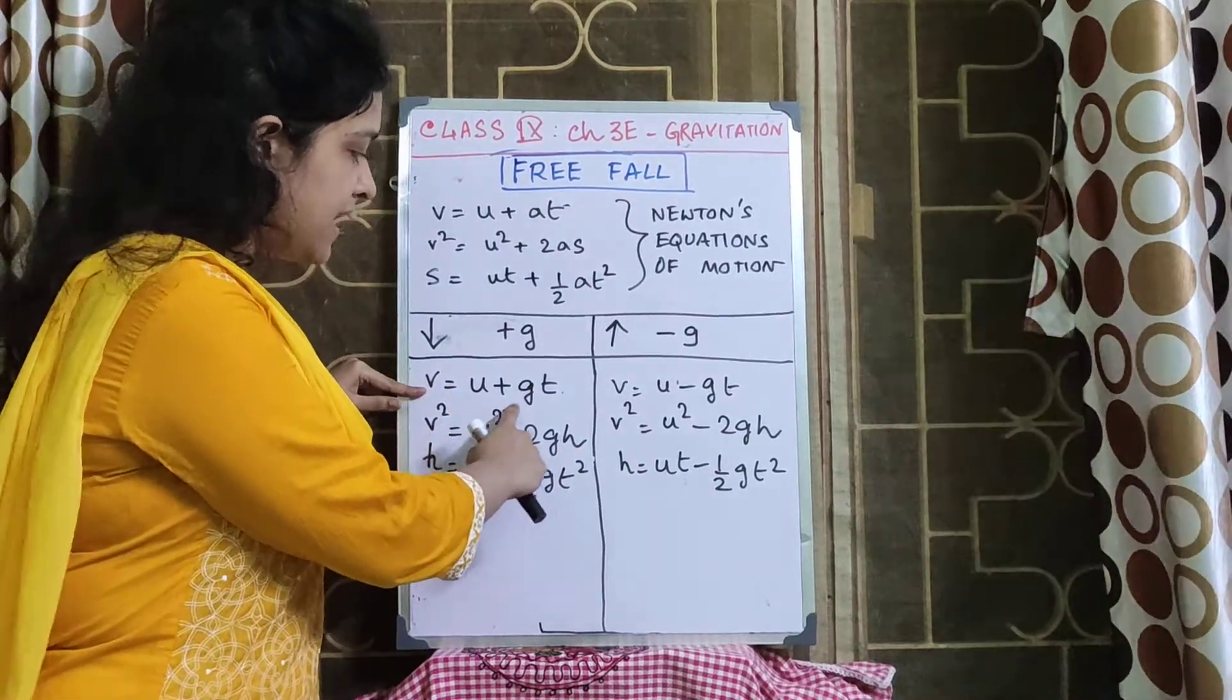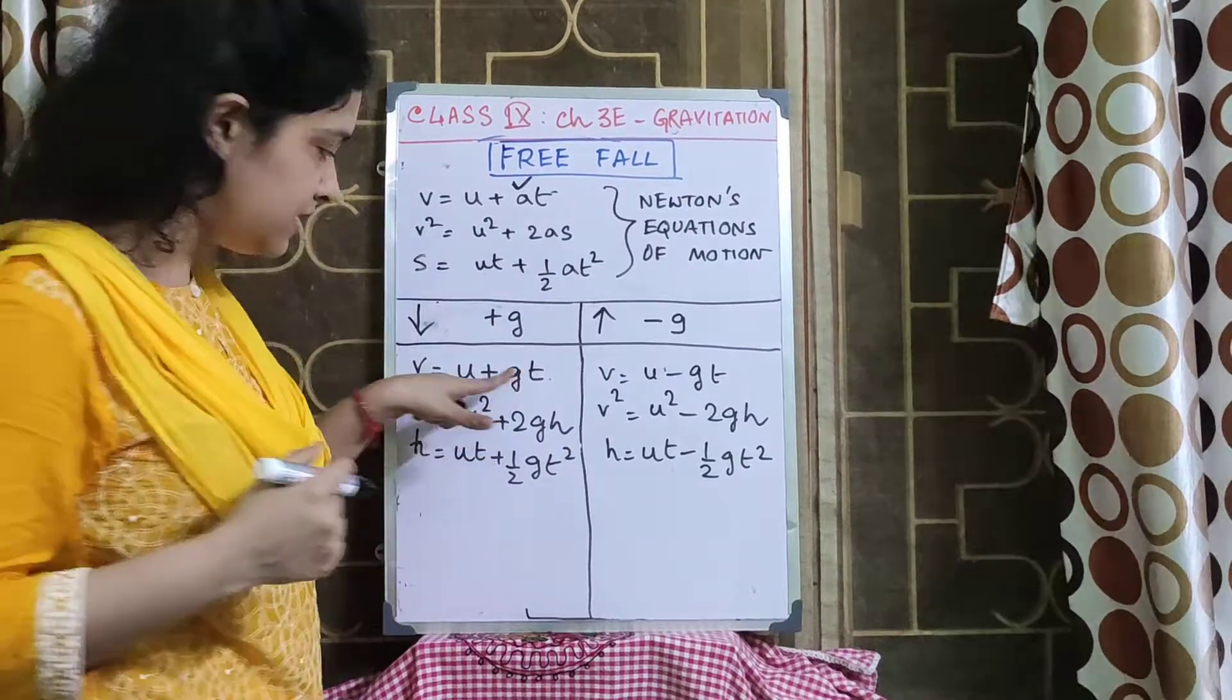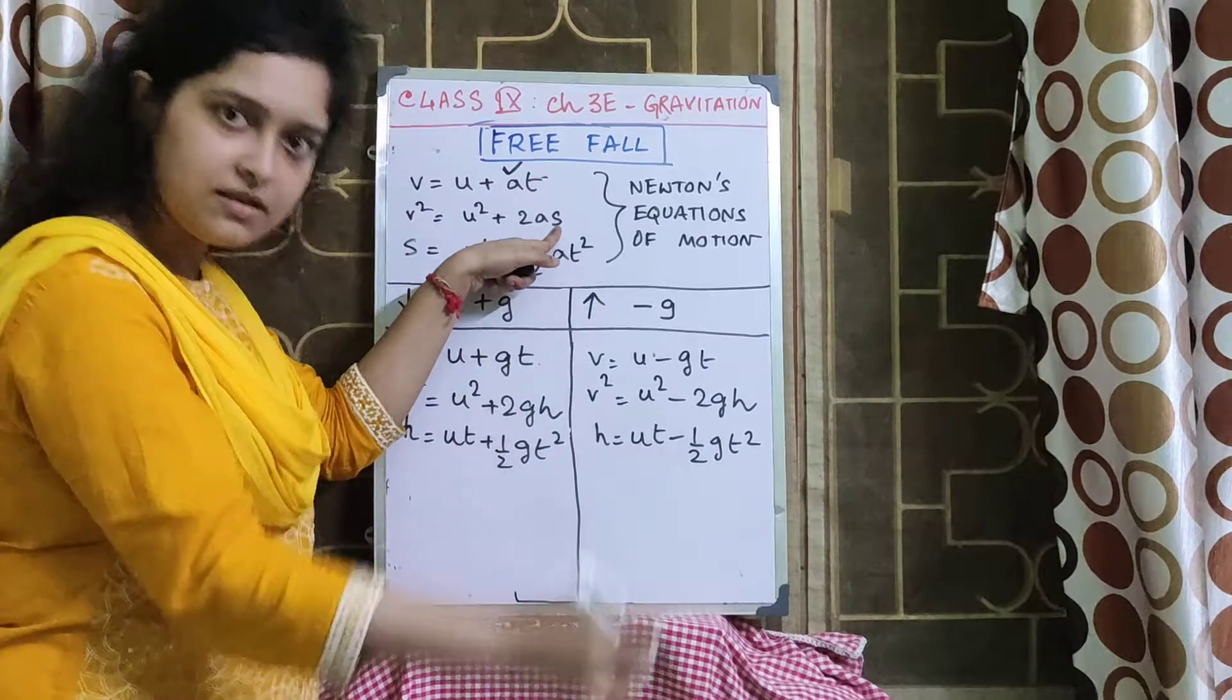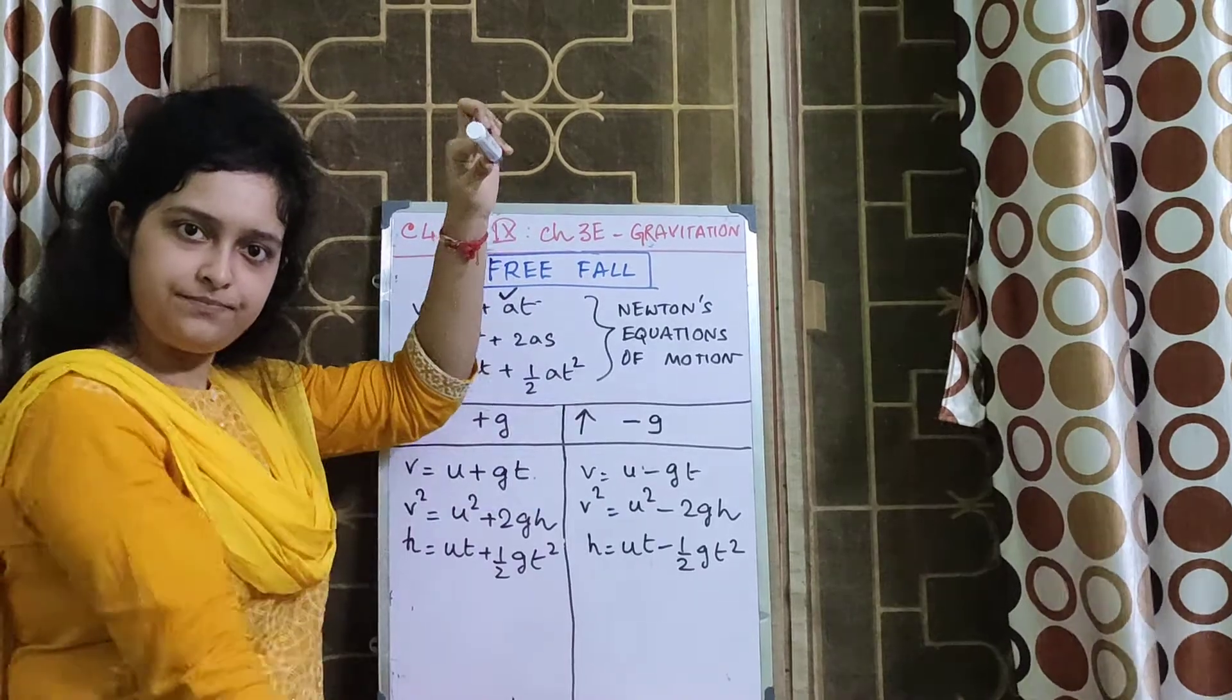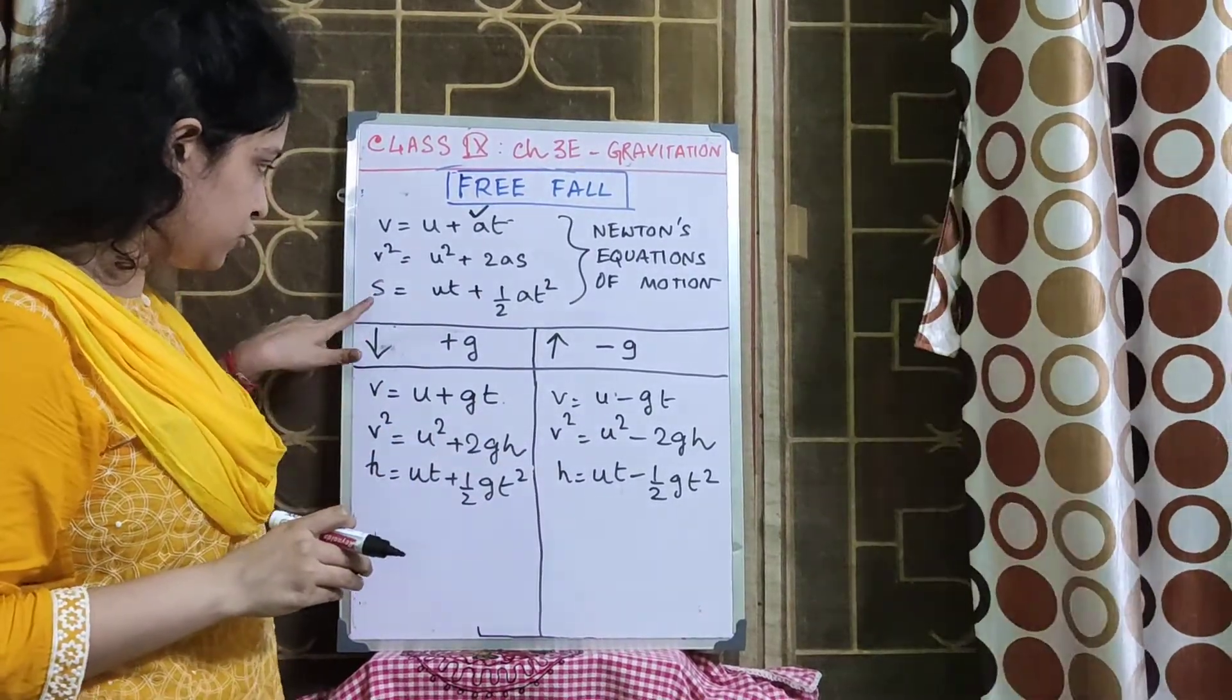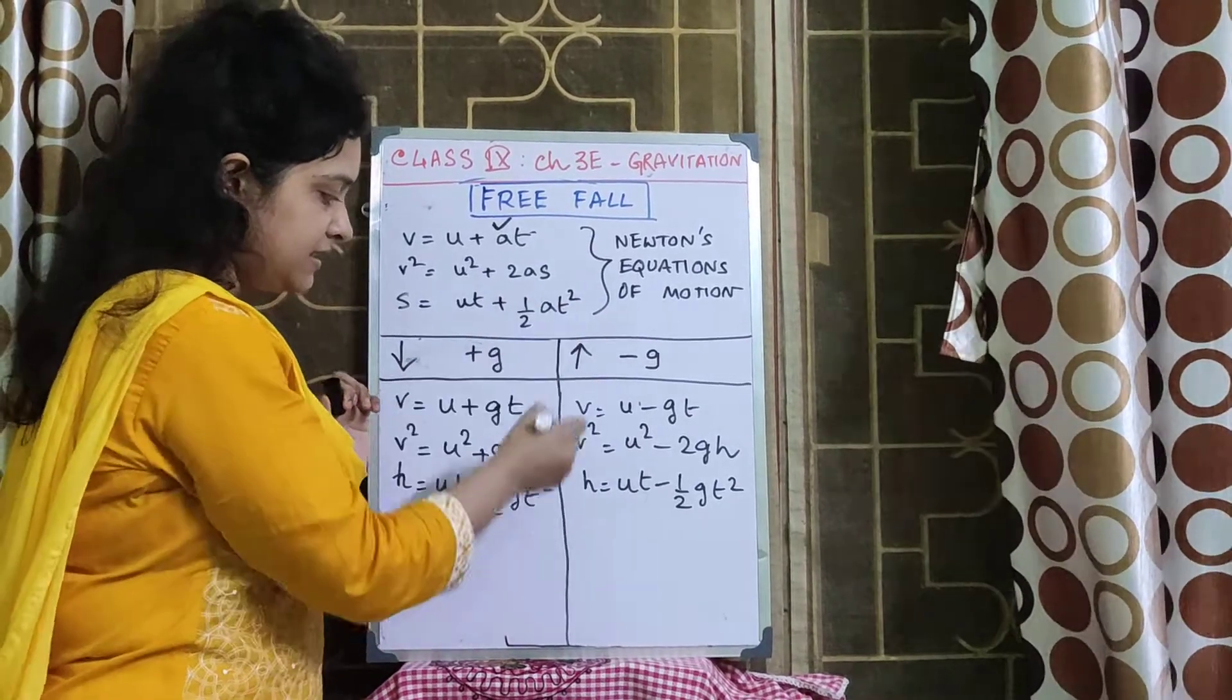Now let's see how the equations change. V is equal to U plus GT. See, in just the place of A, I'm substituting G, because now G is my acceleration, acceleration due to gravity. V square equal to U square plus 2GH. H is nothing but the height. It's falling from this height to the ground. H is the height. We just use H in place of S. H is equal to the height which is traveling, that is equal to UT plus half GT square.